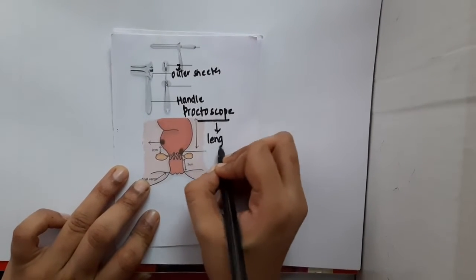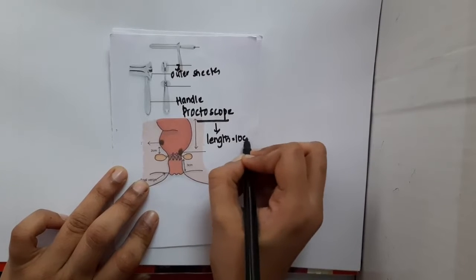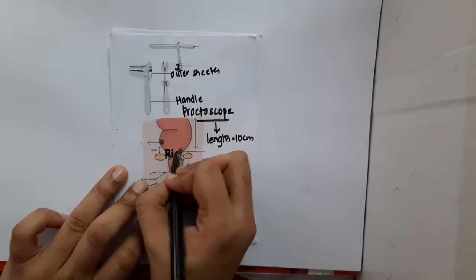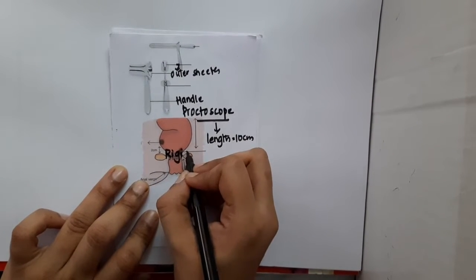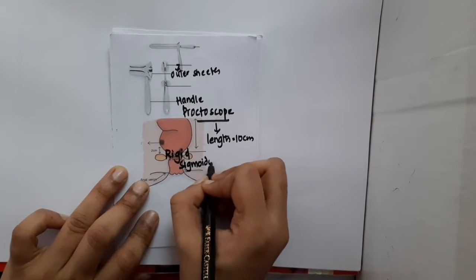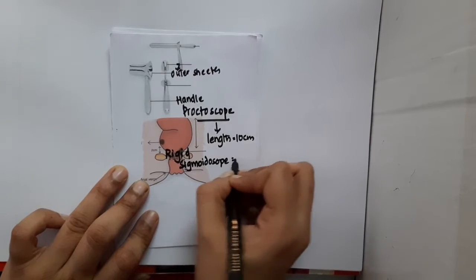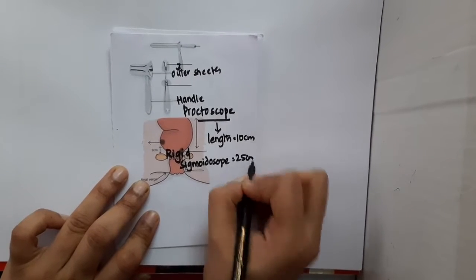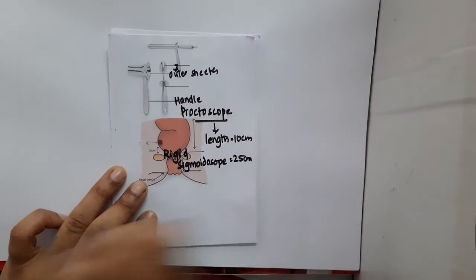The length of the proctoscope is 10 centimeters. Then we also have one thing which is the rigid sigmoidoscope. What is the length of the rigid sigmoidoscope? The length of the rigid sigmoidoscope is 25 centimeters.